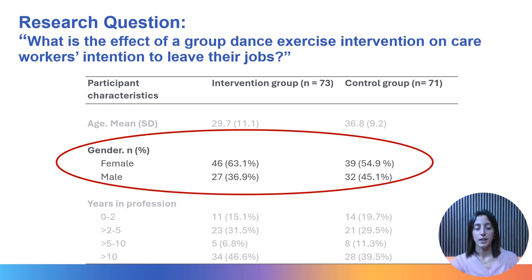We now move on to the next characteristic: gender. This is a categorical type of variable — one where the categories have been predetermined and tend to be fixed. It is useful to focus on the percentages of the distribution rather than the raw numbers. We can see that all cells in the intervention group and control group columns for gender, when summed up, equal 100%, meaning we can easily compare distributions between the two groups. There is a higher proportion of females in the intervention group compared to the control group: 63.1% versus 54.9%. Always check that your assumptions about this difference are based on evidence from the literature.